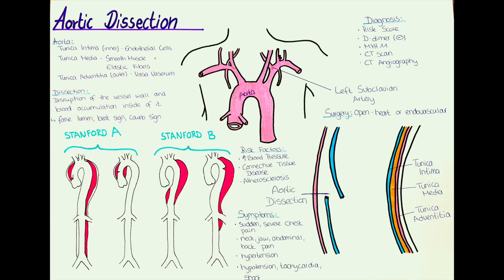How can we diagnose an aortic dissection? We can use the aortic dissection detection risk score that helps us to determine the risk factors that a patient has. We can also take a blood sample and measure the levels of D-dimer and biochemical markers. Usually a negative D-dimer and an increased level of MYH11 in the blood suggests an aortic dissection.